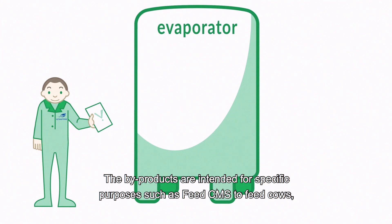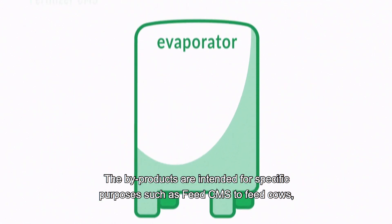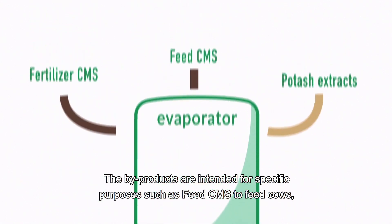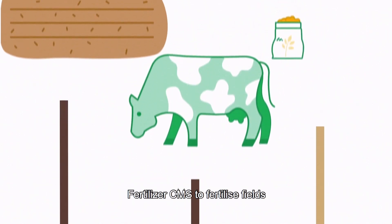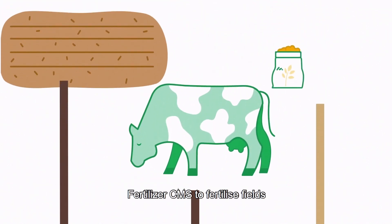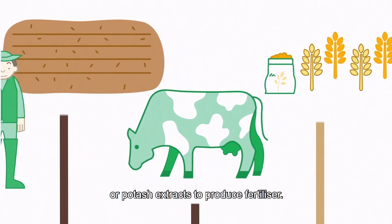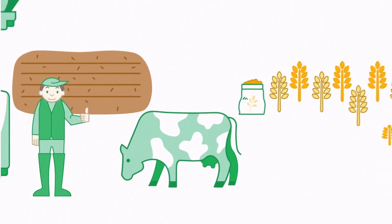The by-products are intended for specific purposes, such as feed to nourish cows, fertilizer to fertilize fields, or potash extracts to produce fertilizer.